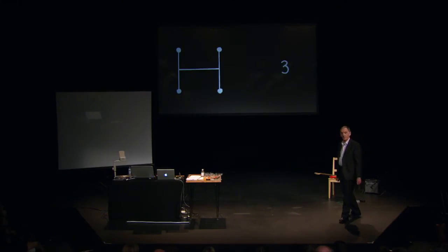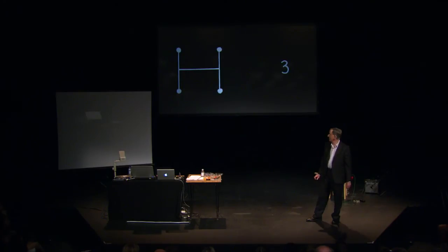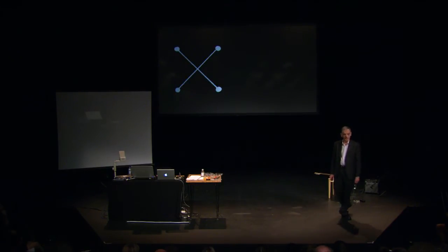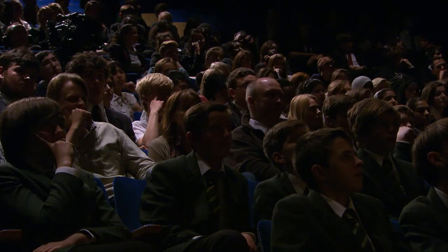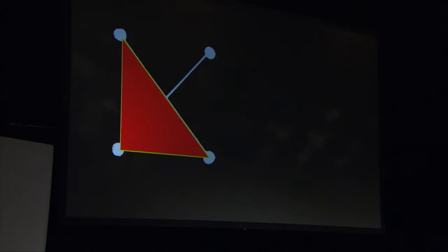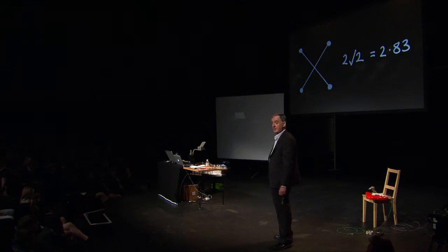I'm deliberately waffling a little to give many of you time to figure out that you do better by making use of the diagonals. That allows you to get from one town to any other town and it does very slightly better than three because by Pythagoras' theorem the two shorter sides of that triangle are one, so the long side is root two, so the total road network is of length two root two which is a bit less than three.